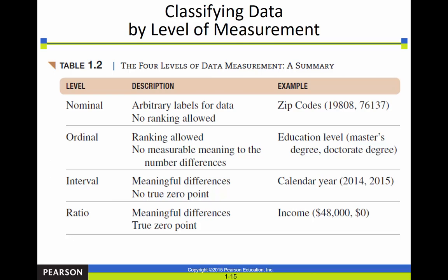The two quantitative subcategories are interval and ratio. Interval data has meaningful differences between values — calendar years are the example — but there's no true zero point. Even year zero wouldn't mean the absence of years; it would still be a year. Ratio data has meaningful differences and a true zero point. If somebody has an income of zero dollars, that literally means they have made no money. Those are the four types. It's a little confusing now, but as you work with it it'll become clearer.